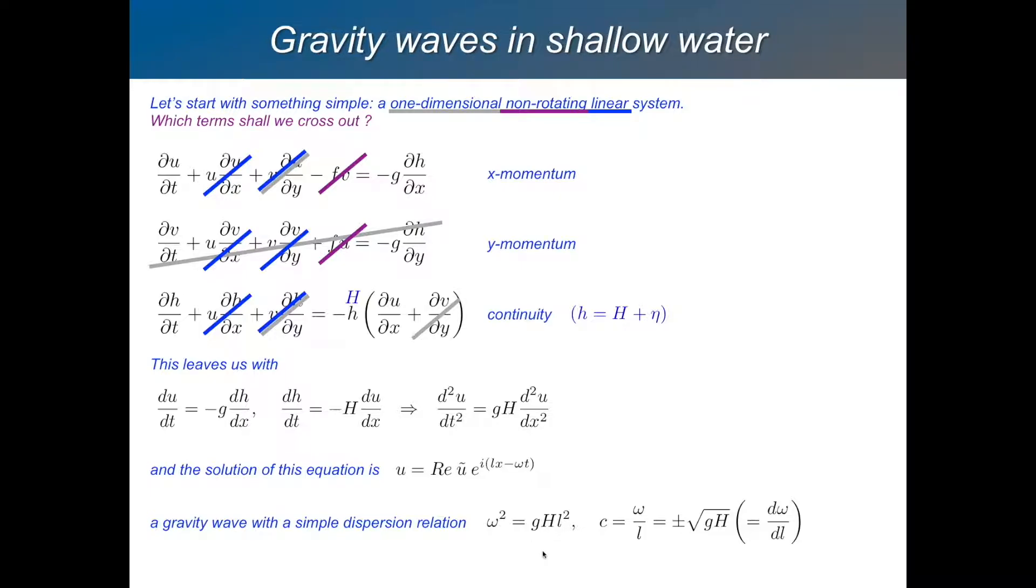So from this, we get straight away that the phase speed omega over L is just a constant, root gh, that's the gravity wave phase speed. It's constant. It doesn't depend on wavelength or frequency. So the waves are non-dispersive. Same phase speed for all wavelengths.